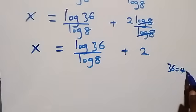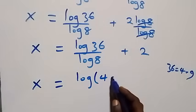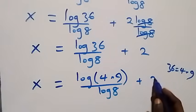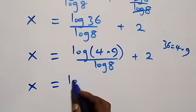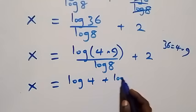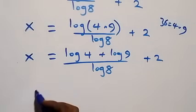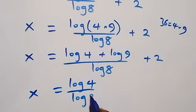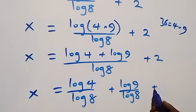Next step, we rewrite 36 as 4 times 9. So x equals log of 4 times 9 over log 8 plus 2. By the log product rule, we rewrite this as x equals log 4 plus log 9 over log 8 plus 2. Separating into two fractions: x equals log 4 over log 8 plus log 9 over log 8 plus 2.